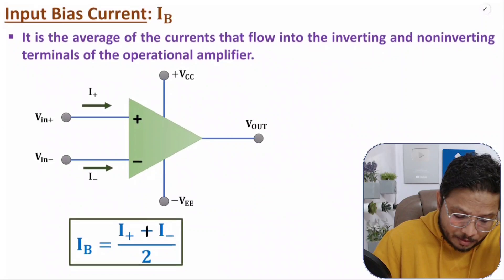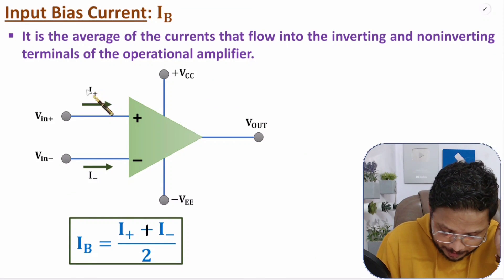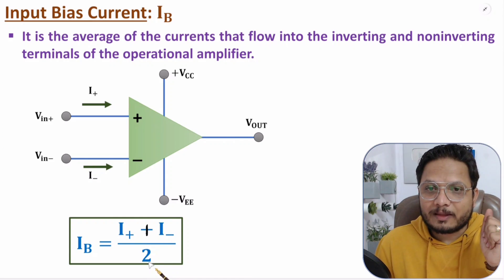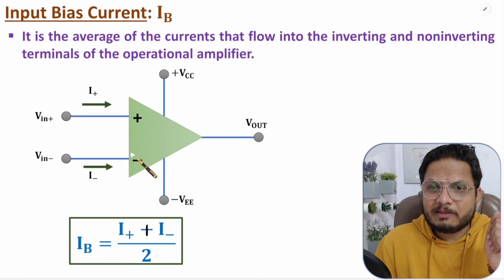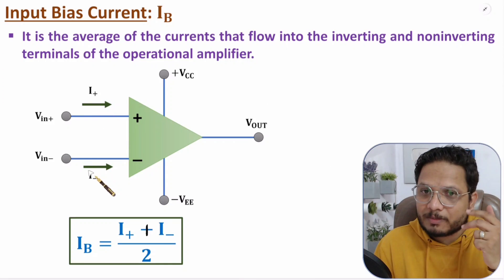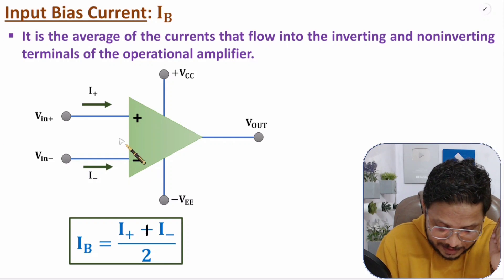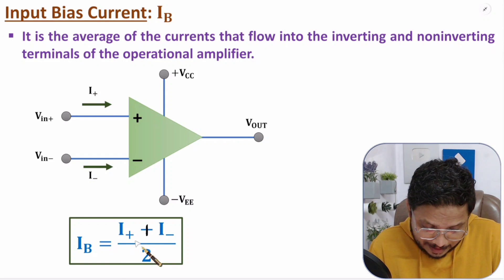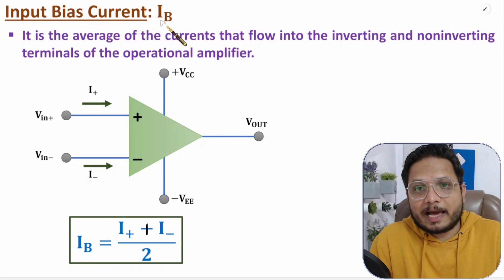The next definition is input bias current. Input bias current is simply the average of I-plus and I-minus, that is (I-plus + I-minus) / 2. Ideally it has to be zero because ideally input impedance of the op-amp is infinite. But practically, input impedance cannot be infinite, so I-plus and I-minus will exist, and their average — input bias current IB — will also be non-zero.